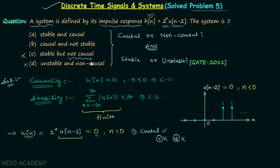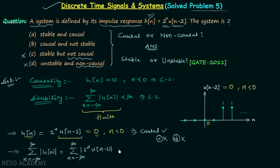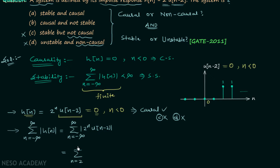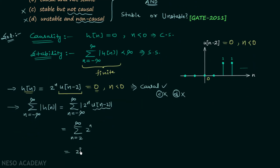Now we focus on stability. We calculate the summation from n equal to minus infinity to infinity of |h[n]|, which equals the summation of |2^n * u[n-2]|. Since u[n-2] is nonzero only for n ≥ 2, this becomes the summation from n equal to 2 to infinity of 2^n, giving us 2^2 + 2^3 + 2^4 + ... continuing to infinity.